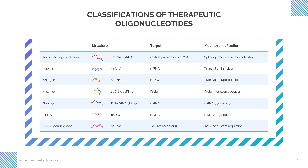Small interfering RNA, or siRNA, is a class of double-stranded RNA, a non-coding RNA molecule typically 20 to 24 base pairs in length. It interferes with specific gene expression with complementary nucleotide sequences. CpG-containing oligonucleotides are commonly short synthetic single-stranded DNA molecules containing CpG motifs. They stimulate cells bearing TLR9 to activate innate immune responses.